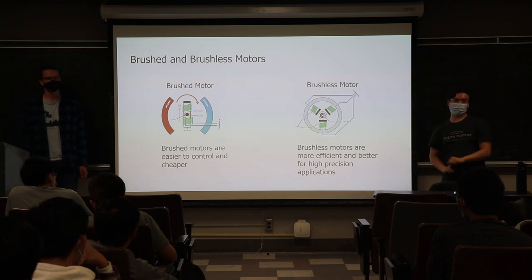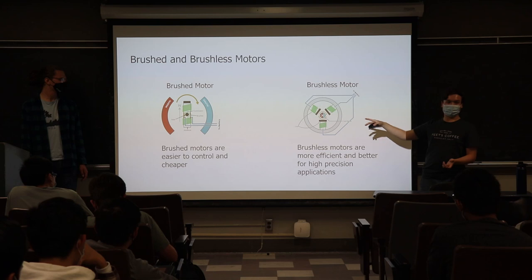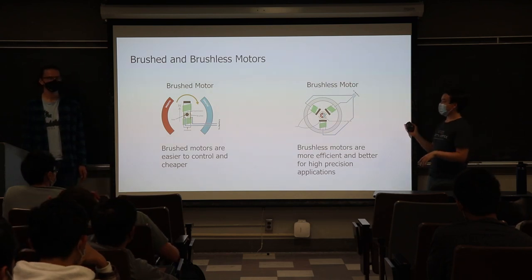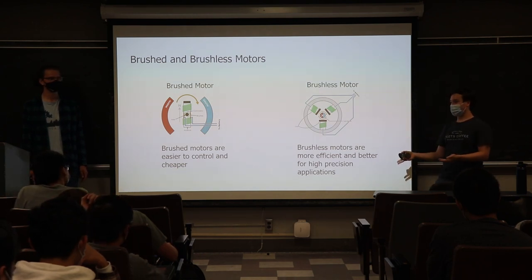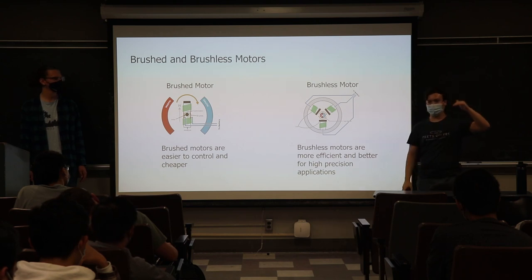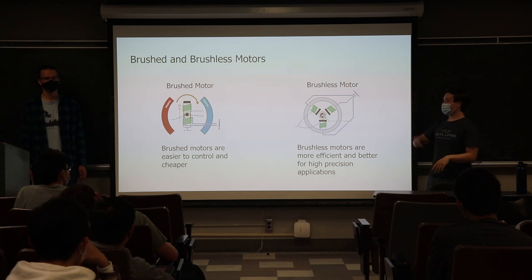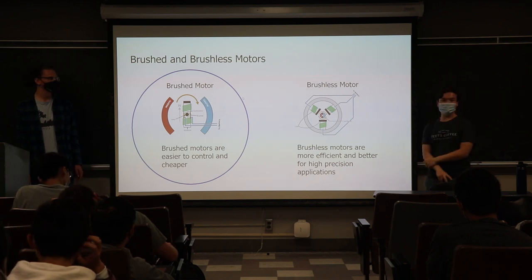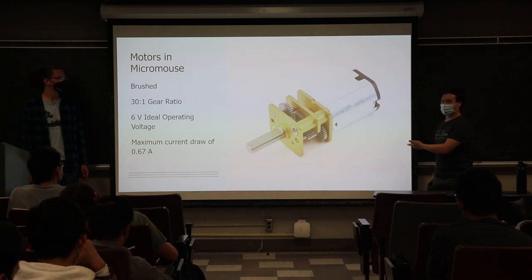Brushed motors are much easier to control because there are only two inputs and they just take a DC voltage, whereas brushless motors require three-phase AC. Because of that DC input, they're super easy to control — they go faster when you give more voltage and slower when you give less. They're also a lot cheaper. For those reasons, we're using brushed motors for our RAT.